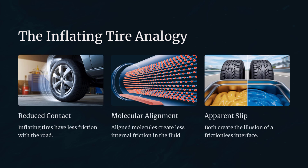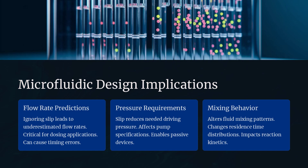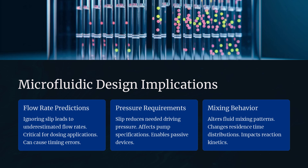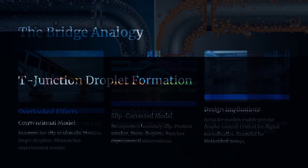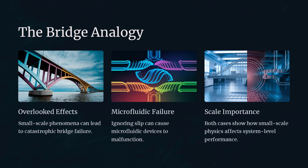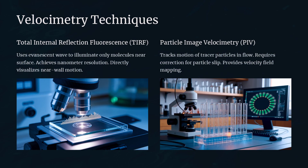Anomalous slip challenges the universality of the Navier-Stokes equations at small scales and prompts the development of generalized boundary models. In microfluidic systems where device dimensions approach the slip length, ignoring slip can lead to significant errors in flow rate and pressure drop predictions. This has critical implications for lab-on-a-chip devices, biomedical assays, and thermal management at the micro scale. Accurately incorporating slip is thus essential for reliable microfluidic design. Predicting droplet formation in T-junction microchannels requires slip-corrected models to match experimental droplet sizes — like building a bridge without accounting for wind-induced oscillations, where oversight at small scales can lead to catastrophic failure.